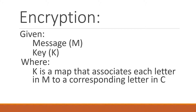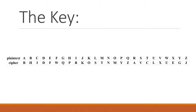for the monalphabetic substitution cipher, the key k is a map that associates each letter in the plaintext message m to a corresponding letter in the ciphertext c. Let's look at an example. Right here, this is a map and we can see that it associates every letter in the plaintext to a corresponding letter in the ciphertext.